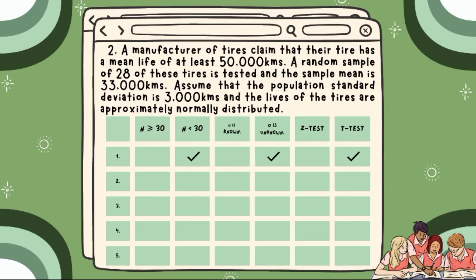Number 2: A manufacturer of tires claimed that their tire has a mean life of at least 50,000 kilometers. A random sample of 28 of these tires is tested and the sample mean is 33,000 kilometers. Assume that the population standard deviation is 3,000 kilometers and the lives of the tires are approximately normally distributed. Answer: Our N is 28 which is less than 30, and the population standard deviation is known. Based on the given situation, the test statistic that we are going to apply is the T-test.